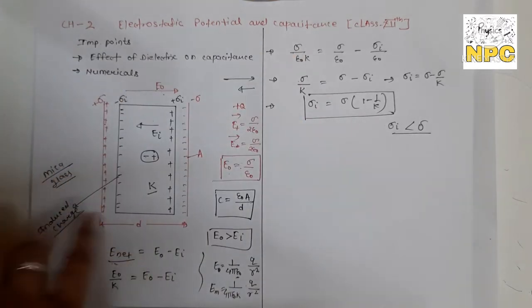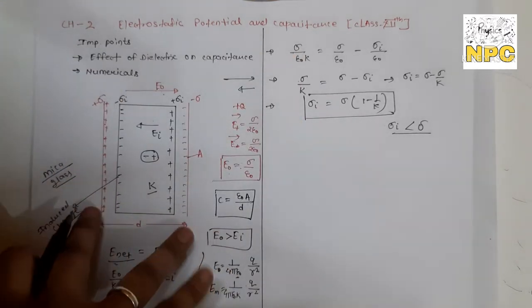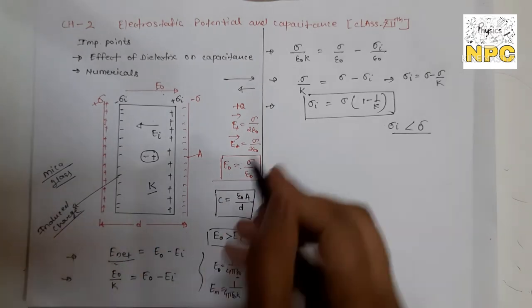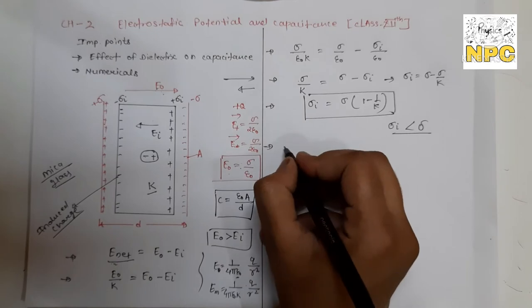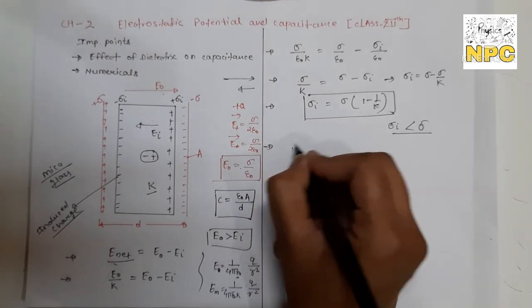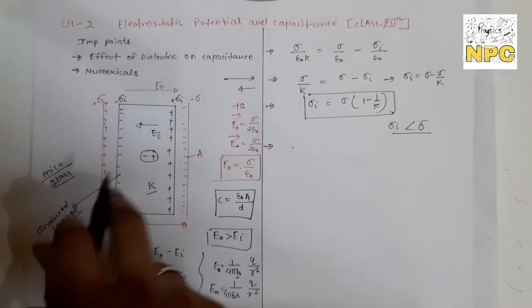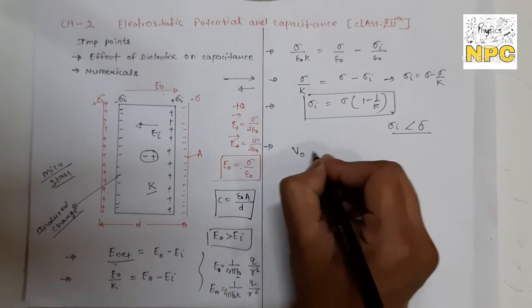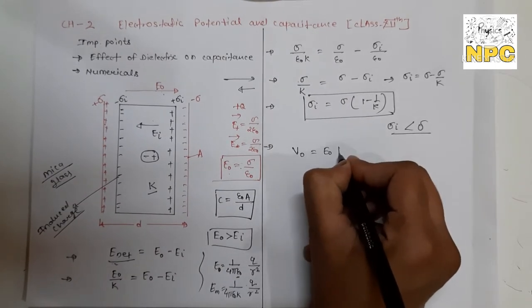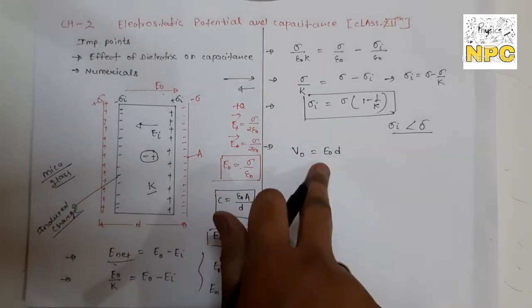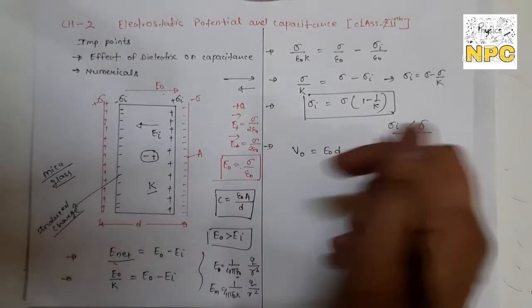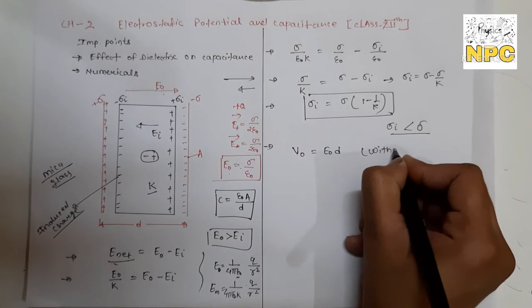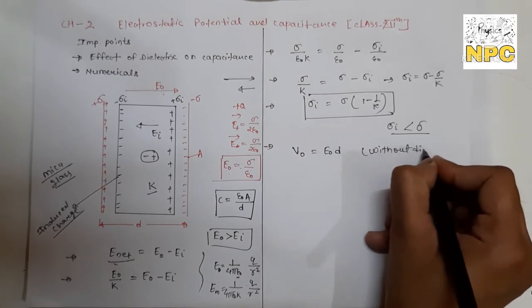Now let's talk about the potential between the plates - with dielectric and without dielectric. First, without dielectric: the relation between potential V and electric field E is V₀ = E₀ × D, where D is the distance between the plates.